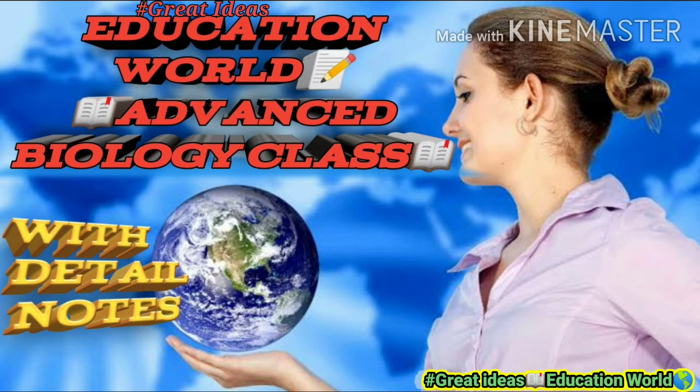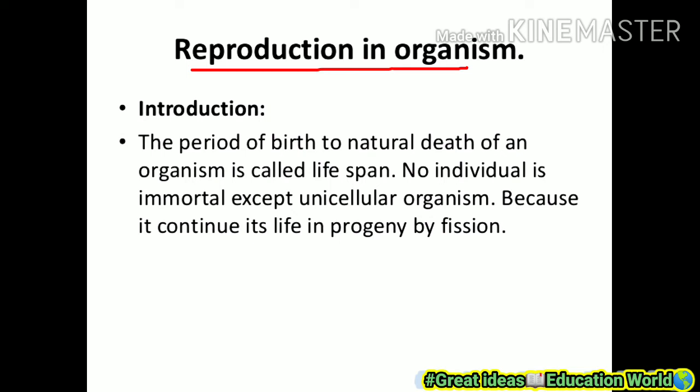What is reproduction in organisms? Introduction: the period from birth to the natural death of an organism is called its life span. No individual is immortal except unicellular organisms, because they continue their life in progeny by fission. Here are two terms: fission and life span. Fission is a type of asexual reproduction, which we will discuss ahead in the asexual reproduction topic.